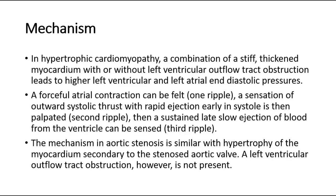For its mechanism, in hypertrophic cardiomyopathy, a combination of a stiff thickened myocardium with or without left ventricular outflow tract obstruction leads to higher left ventricular and left atrial end diastolic pressures. A forceful atrial contraction can be felt — one ripple. A sensation of outward systolic thrust with rapid ejection early in systole is then palpated — second ripple. Then a sustained late slow ejection of blood from the ventricle can be sensed — third ripple.